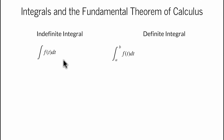We have now encountered two types of integrals: the indefinite integral, here written as the integral of f of t dt, and the definite integral, here written as the integral from a to b of f of t dt. Although we write the integrals in similar ways, the two integrals are quite different objects.